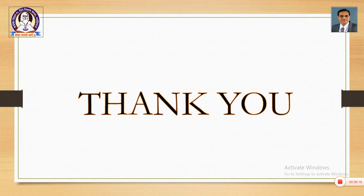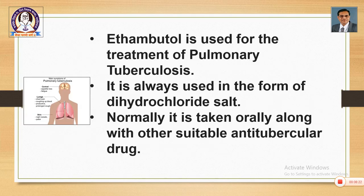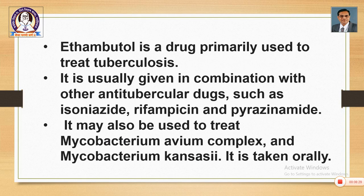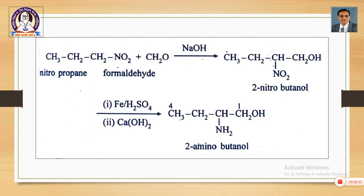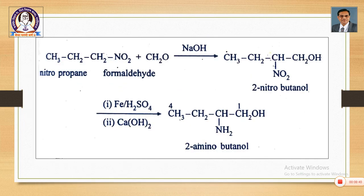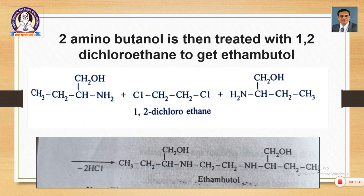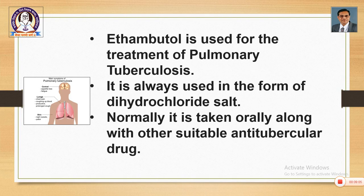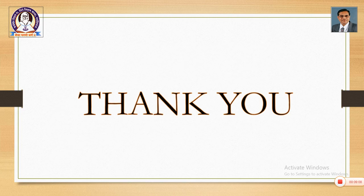With this we will stop the synthesis. To revise briefly: ethambutol is an anti-tubercular drug obtained from nitropropane, formaldehyde, and 1,2-dichloroethane. In the first step, nitropropane is converted into 2-nitrobutanol. In the second step, it is converted into 2-aminobutanol. In the third step, 2-aminobutanol is condensed with 1,2-dichloroethane to get the desired product, ethambutol. Next time we will cover another drug. Thank you.